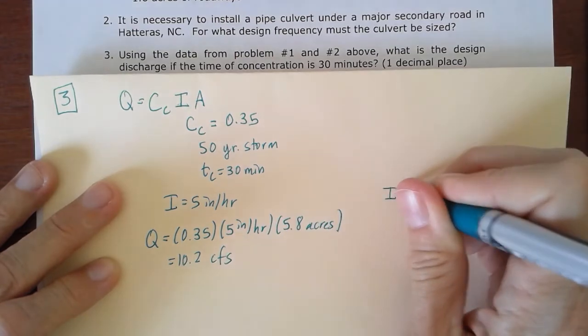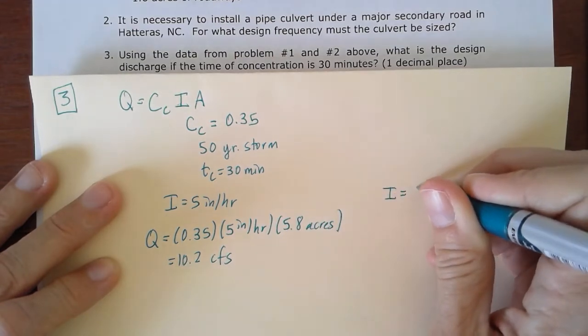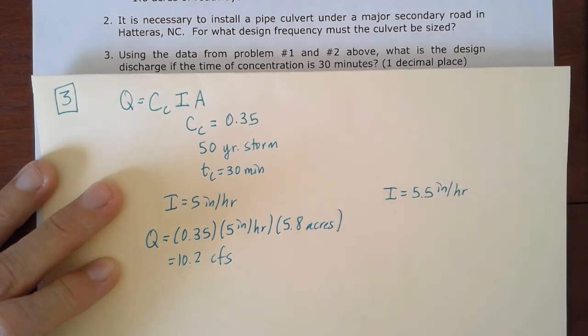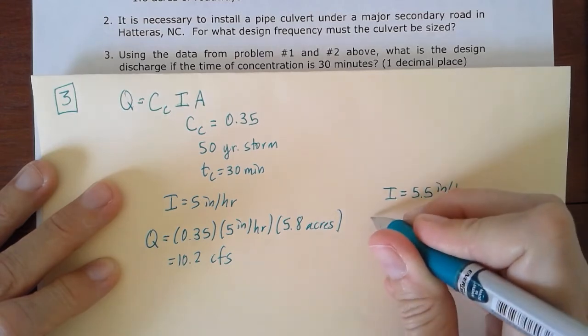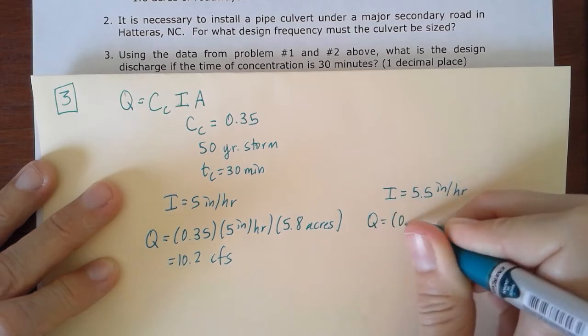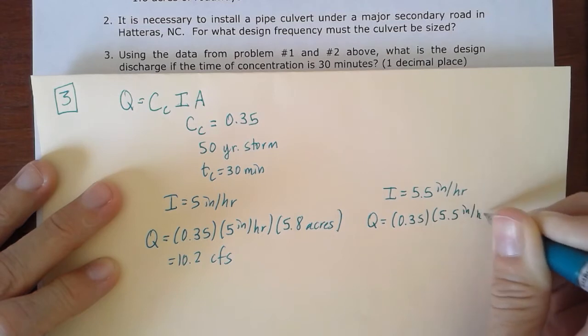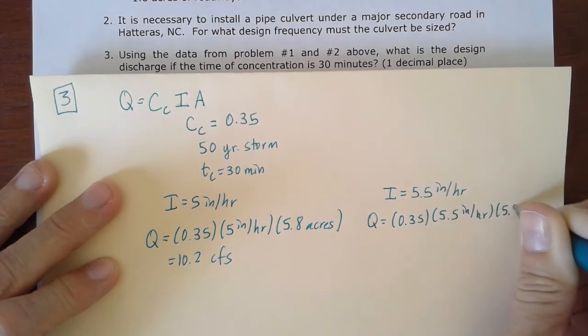Or we might choose, I think probably more appropriately for that one, I is 5.5 inches per hour. So we're kind of in the middle of that section. And so for this one, we have again, Q is the 0.35, now times the 5.5 inches per hour, and then times the 5.8 acres.